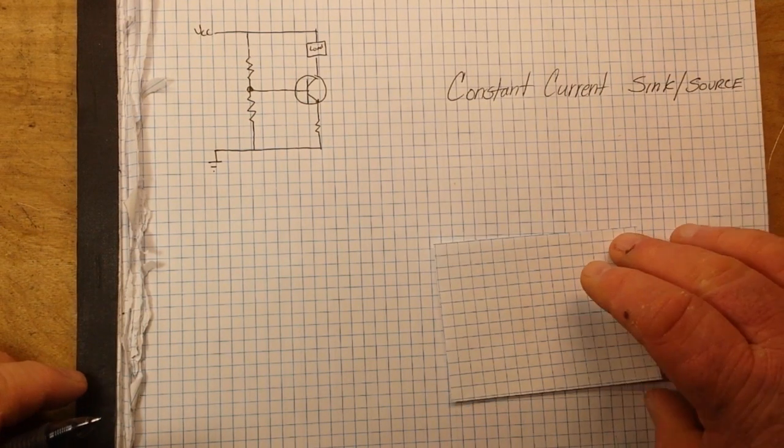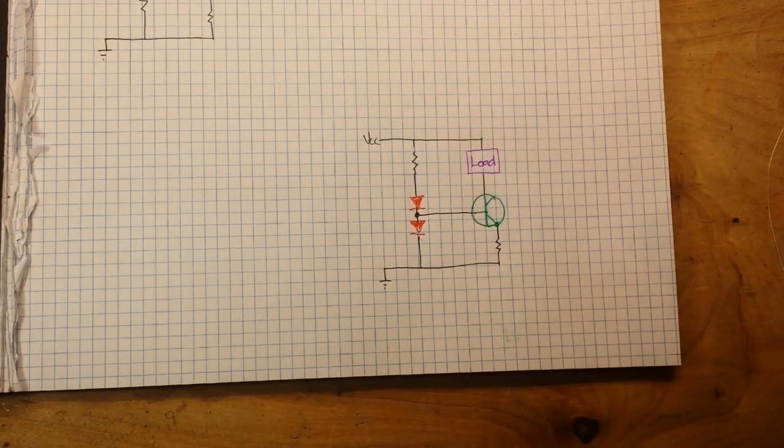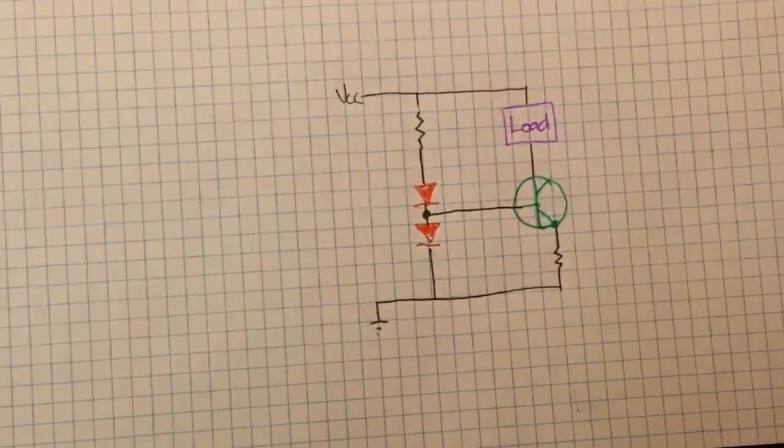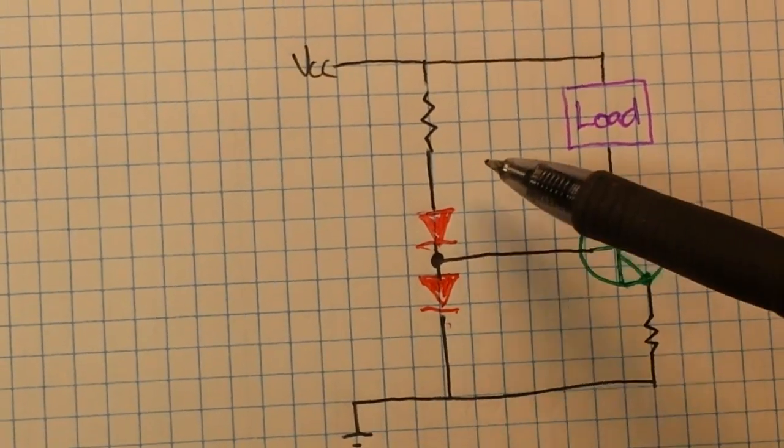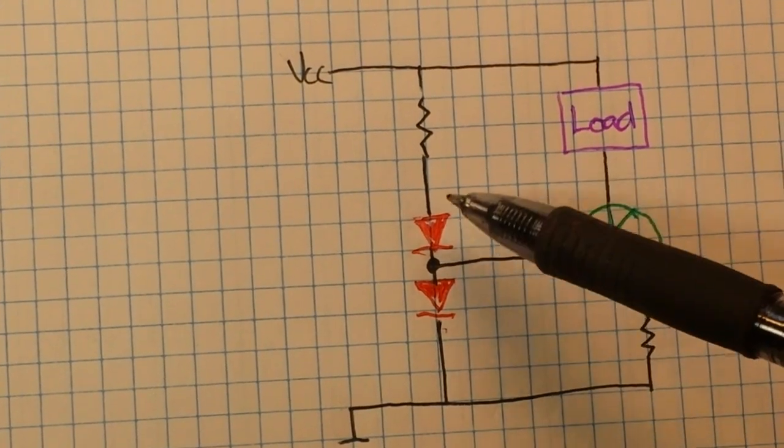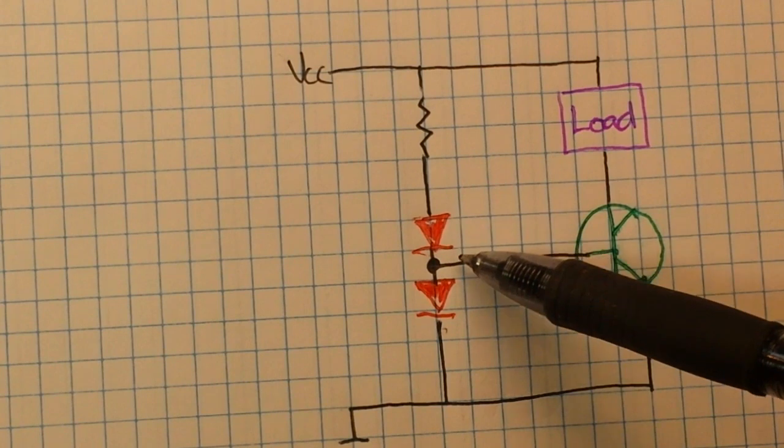We can do that right here. Let's zoom in. So if we take our old circuit that had the voltage divider here in this leg and we pretty much replace the voltage divider with a pair of diodes...